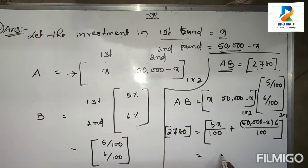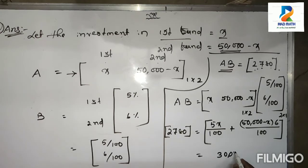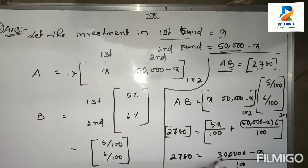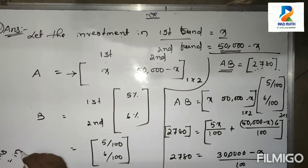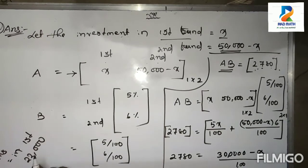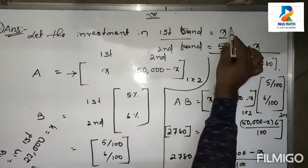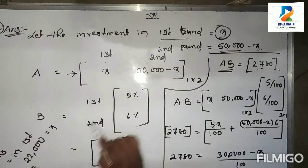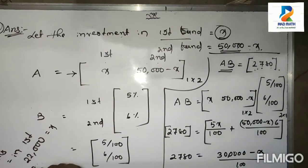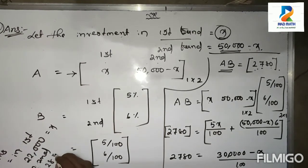Solving this equation: 5x/100 + (50000 − x) × 6/100 = 2780. Simplifying gives 3000 − x/100 = 2780, so x/100 = 220, meaning x = 22,000. Therefore the investment in the first bond is 22,000 rupees and in the second bond it is 50,000 − 22,000 = 28,000 rupees. This is the answer.